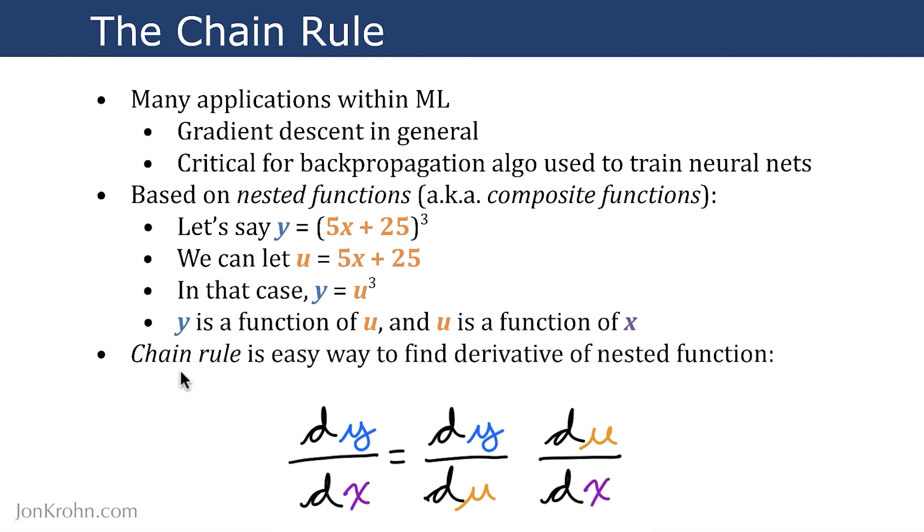So the chain rule is an easy way to find the derivative in a situation where we have nested functions like this, which, again, are very common in machine learning. You can think of deep learning networks as a long chain of nested functions.